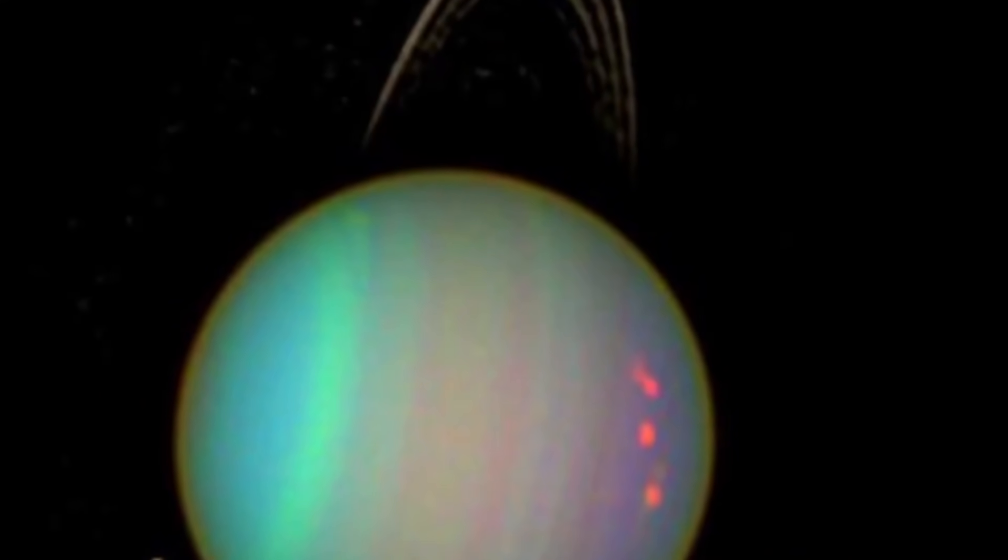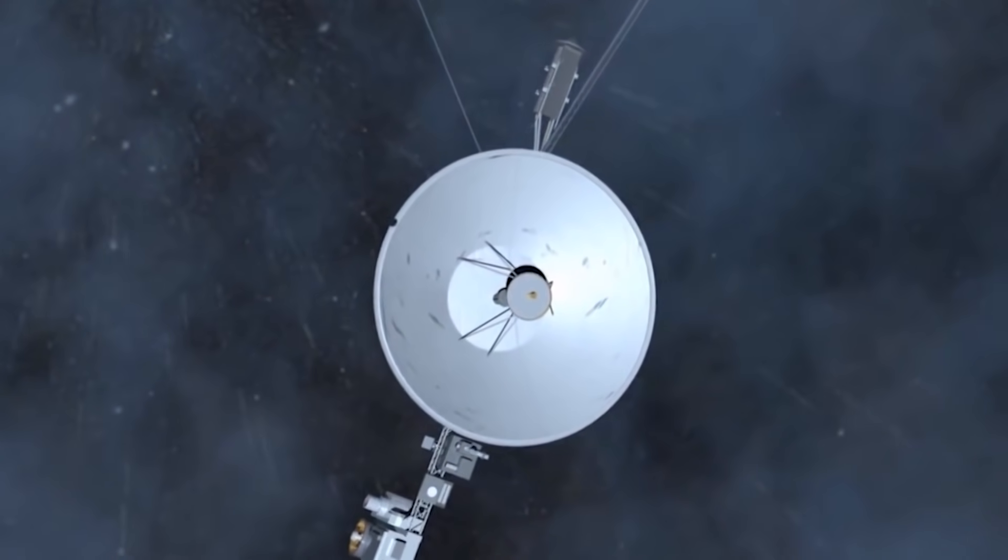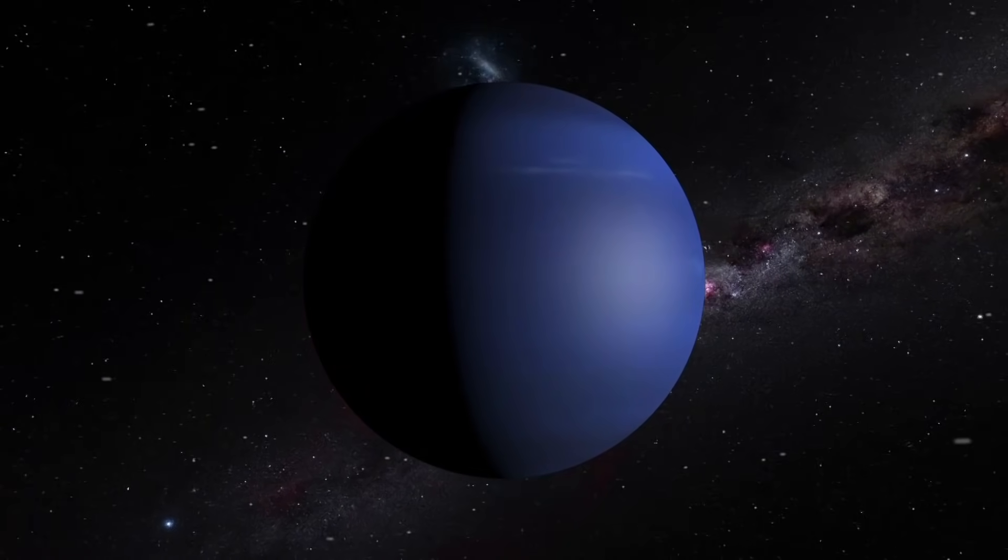In 1986, the probe flew past Uranus and past Neptune later in 1989. It also obtained many unique pictures and discovered 17 moons and ring systems around both planets.